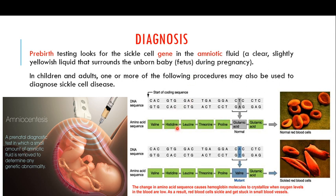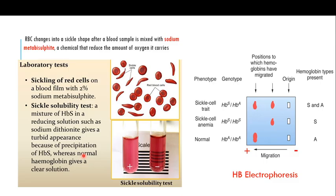This is one method for diagnosis of sickle cell disease — looking at the genome and the sickle cell gene of the fetus in cells isolated from the amniotic fluid. There are also other methods for diagnosing sickle cell anemia.